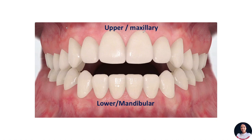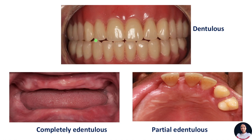First of all, let's see the jaws which hold the teeth. Teeth are present in the jaws and there are two jaws — the upper or the maxillary jaw and the lower, which is also known as the mandibular jaw. The teeth present in the upper jaw are called maxillary teeth, and teeth in the mandibular jaw are called mandibular teeth. The term dentulous means natural teeth present in a jaw, and edentulous means missing teeth. When all teeth are missing, it is called completely edentulous, and when only few teeth are missing, it is known as a partially edentulous arch.